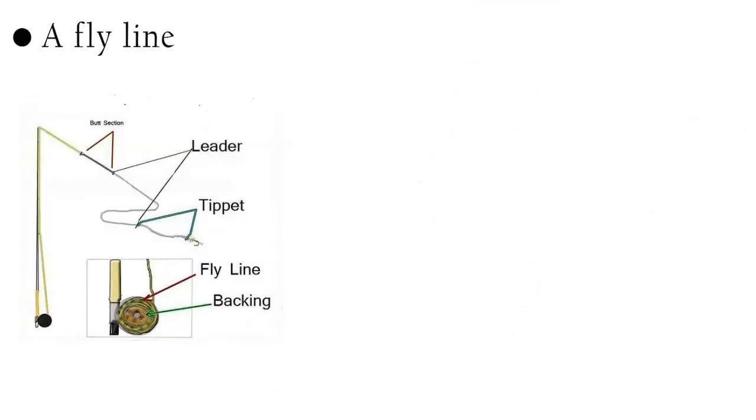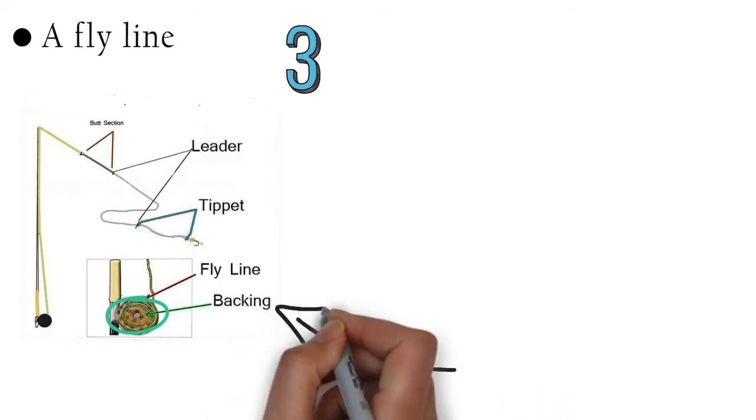A fly line is a special kind of fishing line. It comes in three parts. Fly backing is the longest part of your line. It is thick and heavy. This helps you cast your fishing line as far as possible. It is the first part of the line attached to your reel.